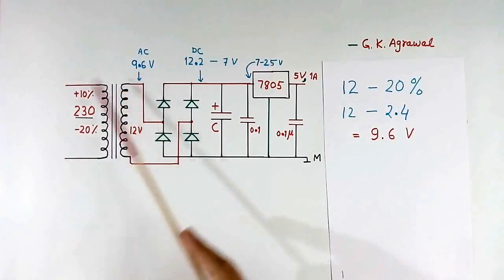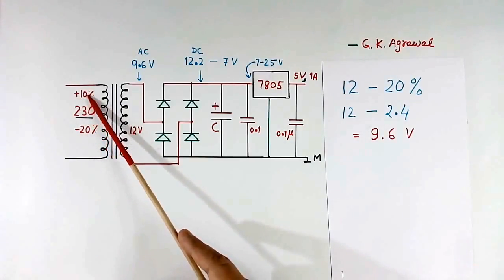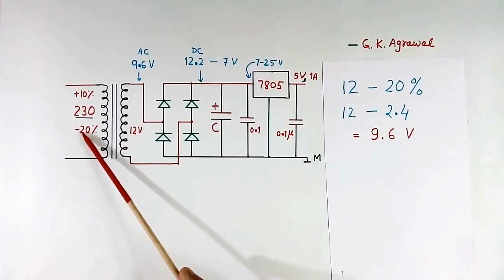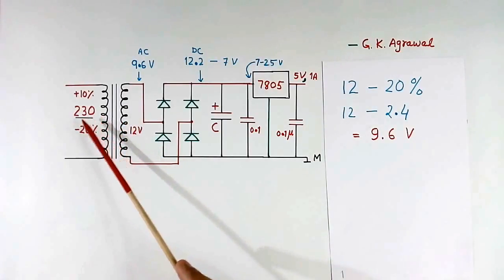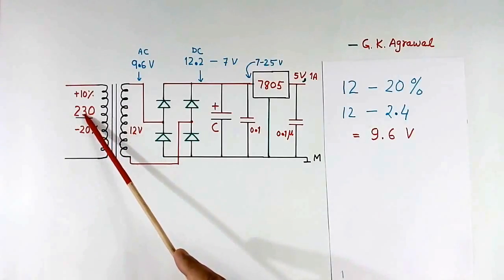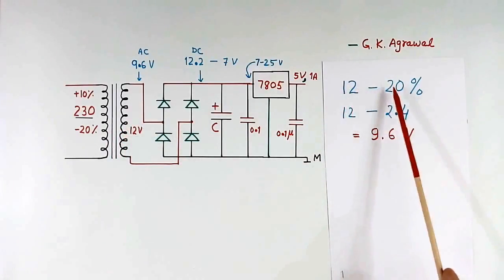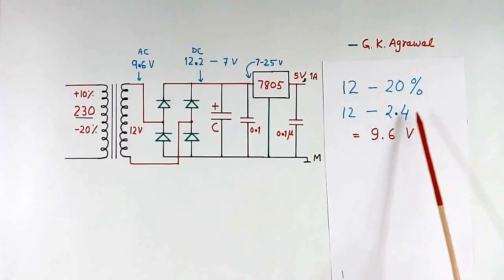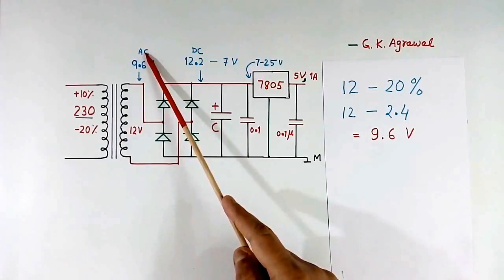Here we have one transformer and primary voltage is 230 volt. But there is always variation in input voltage. So I assume that it can go up to plus 10% and lower side it can come down to minus 20%. This 12 volt is the secondary voltage when input is 230 volt. When voltage is less, this also will be less. Now to calculate the capacitor value we take lower value of input voltage. When voltage at input is less minus 20%, that time this 12 volt will become 12 minus 20%, means 12 minus 2.4 volt is equal to 9.6 volt. So at this point we will get 9.6 volt AC when voltage is less.